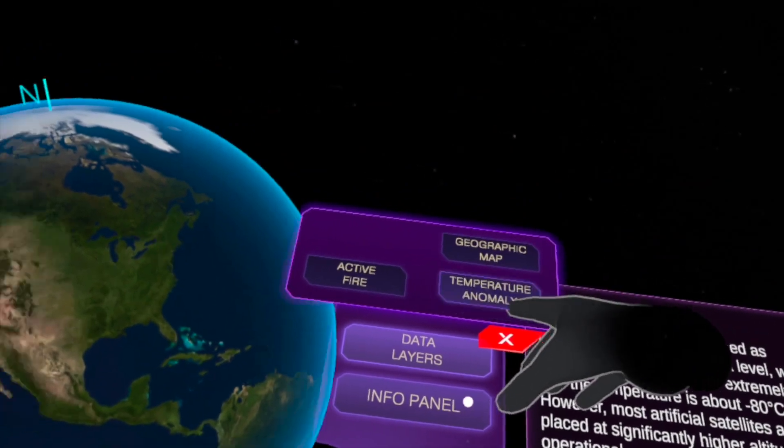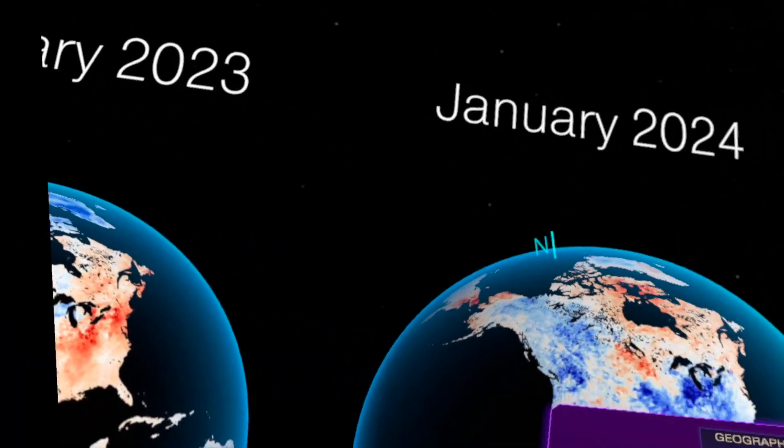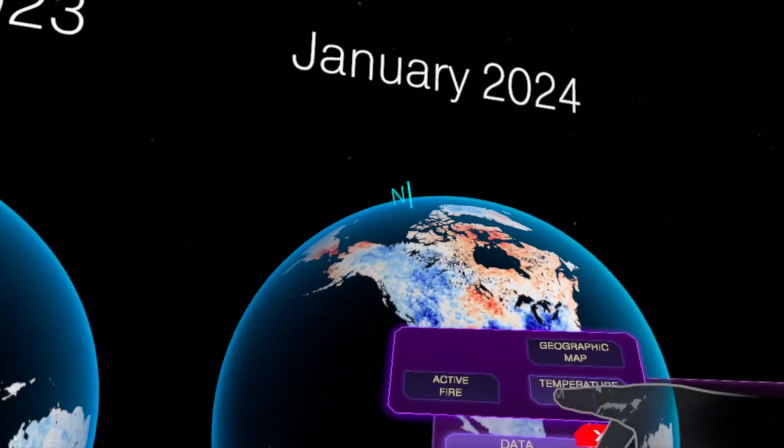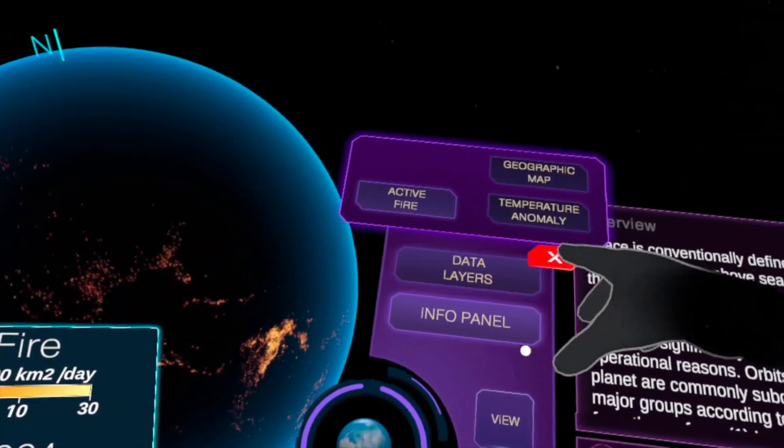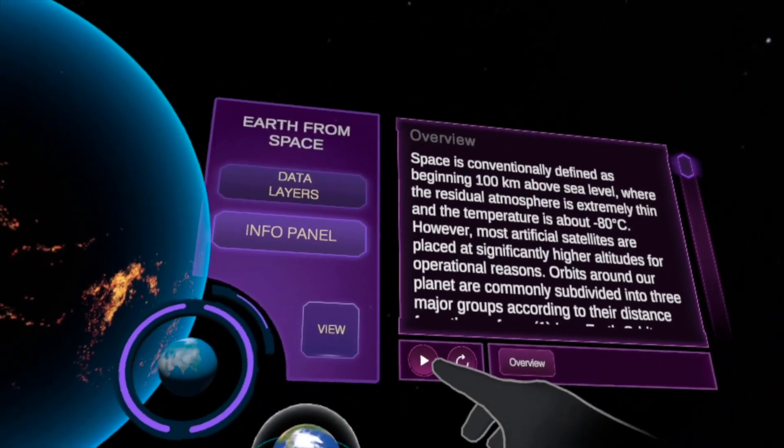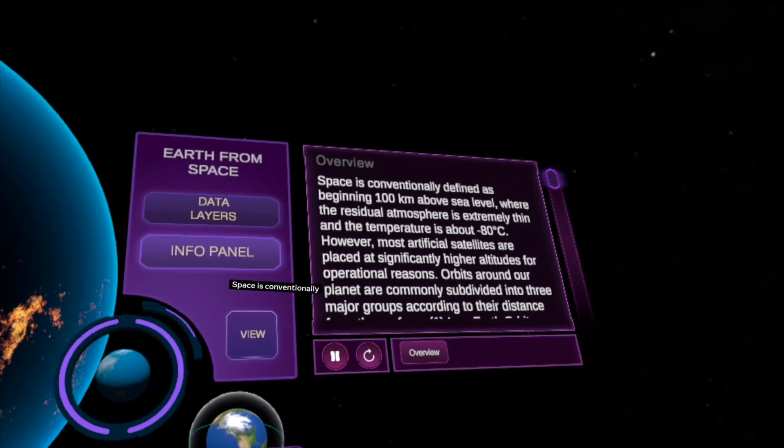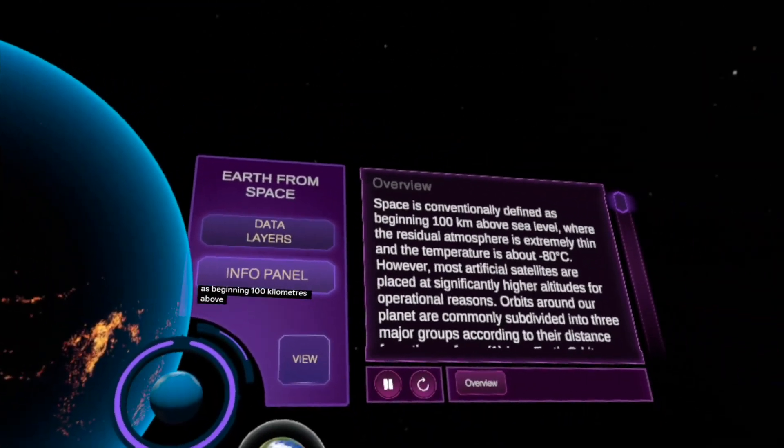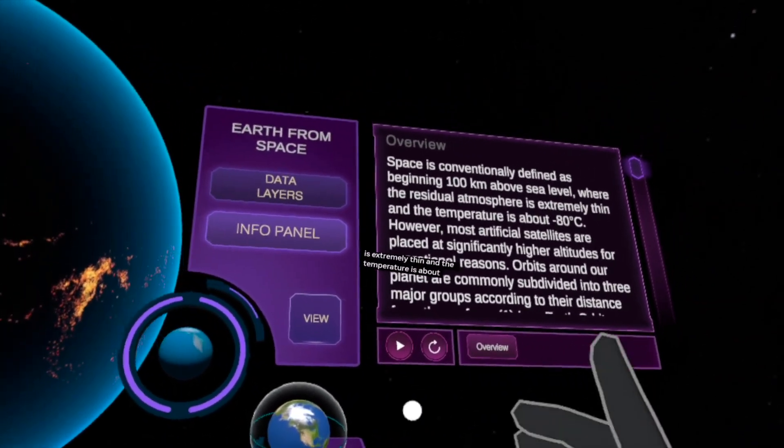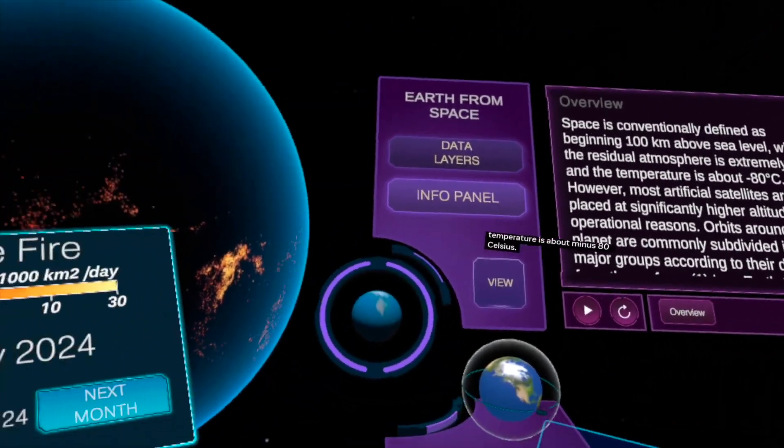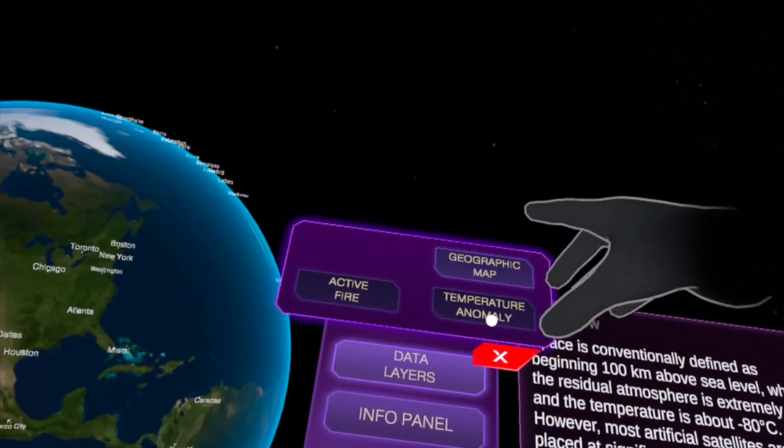So there you can see everything. You have the data layers: geographic map, temperature anomaly, so the climate change. You can see the climate change in America compared from year to year, the active fire, forest fires, and so on. There's even an artificial intelligence reading information.